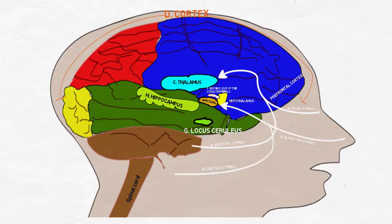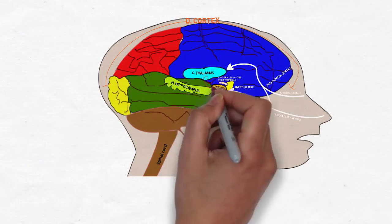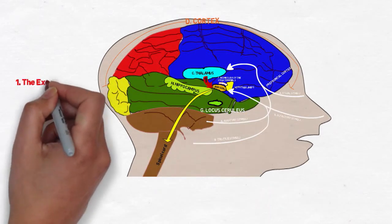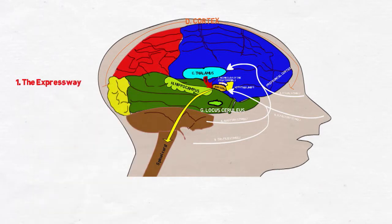Any cues from your incoming senses that are associated with a threat in the amygdala, whether that threat is real or not, current or not, are immediately processed to trigger the fear response. This is the expressway. It happens before you consciously feel the fear.